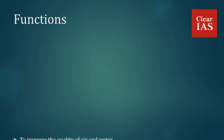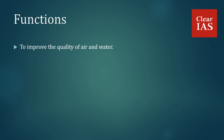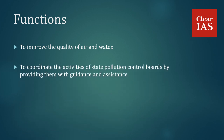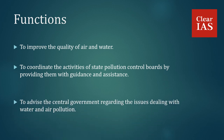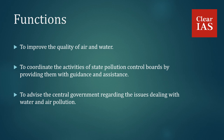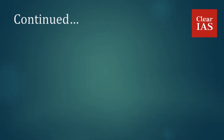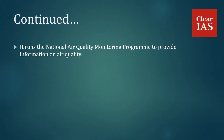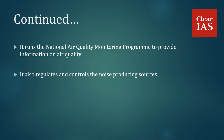Functions: To improve the quality of air and water. To coordinate the activities of State Pollution Control Boards by providing them with guidance and assistance. To advise the central government regarding issues dealing with water and air pollution. It runs the National Air Quality Monitoring Programme to provide information on air quality. It also regulates and controls noise-producing sources.